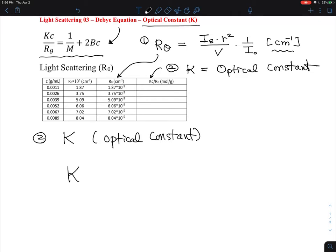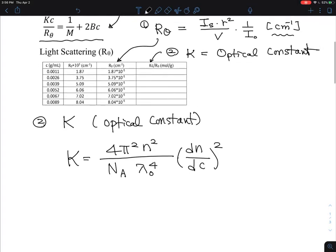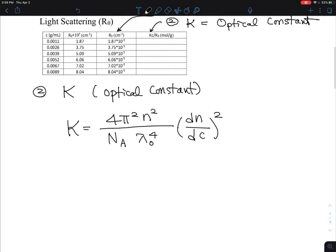And the K is defined as 4π² n² over N_A λ₀⁴ times (dn/dc)². It has derived from the optics based on the Rayleigh scattering. So let's go through this term by one by one. And there are many terms that are related to here.